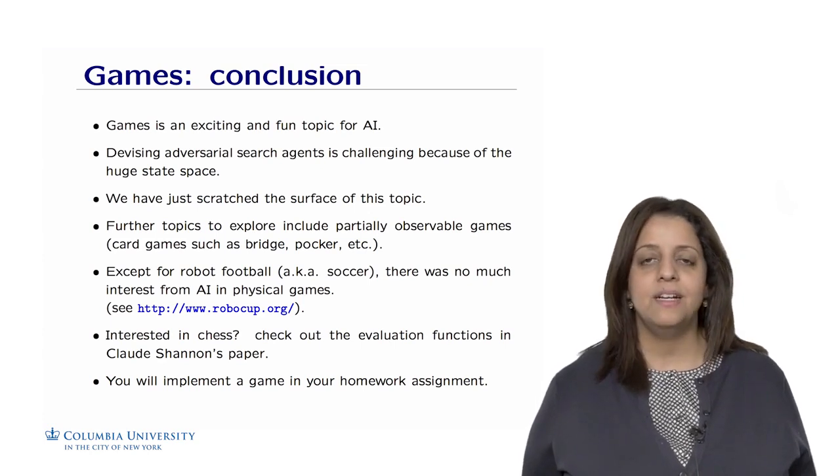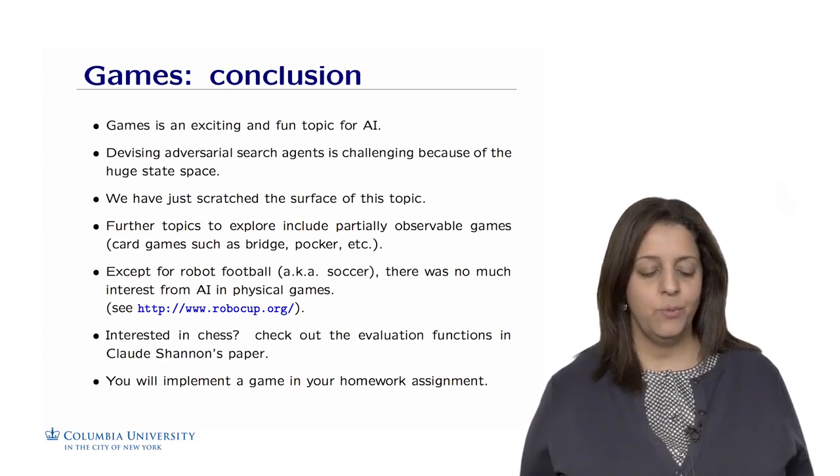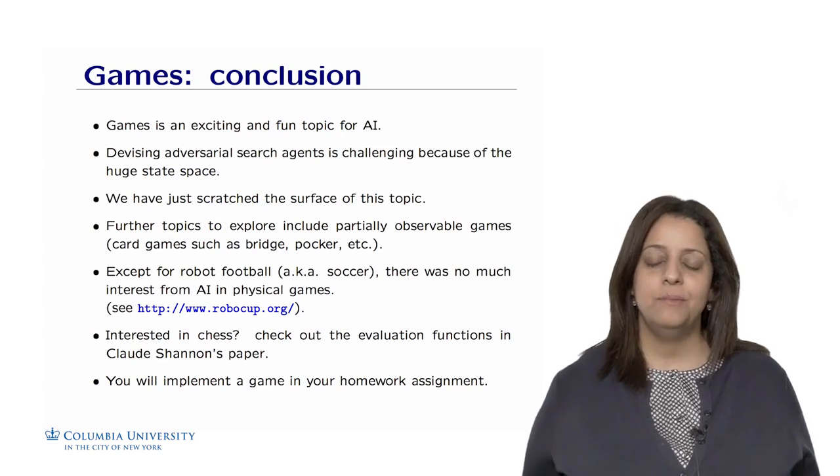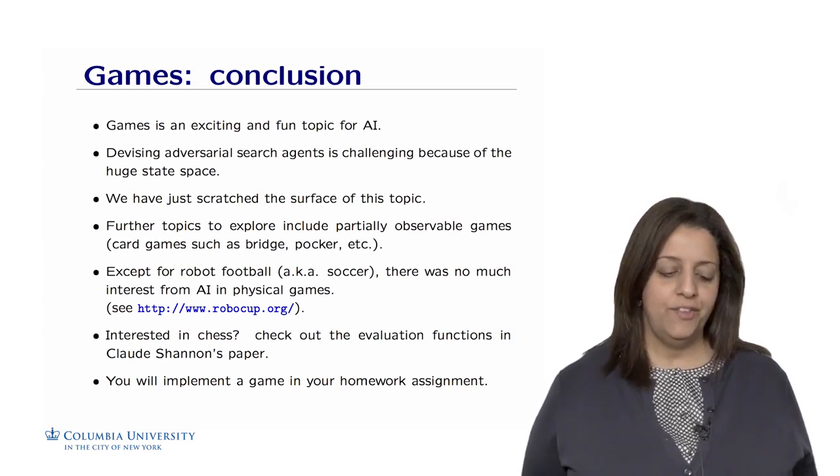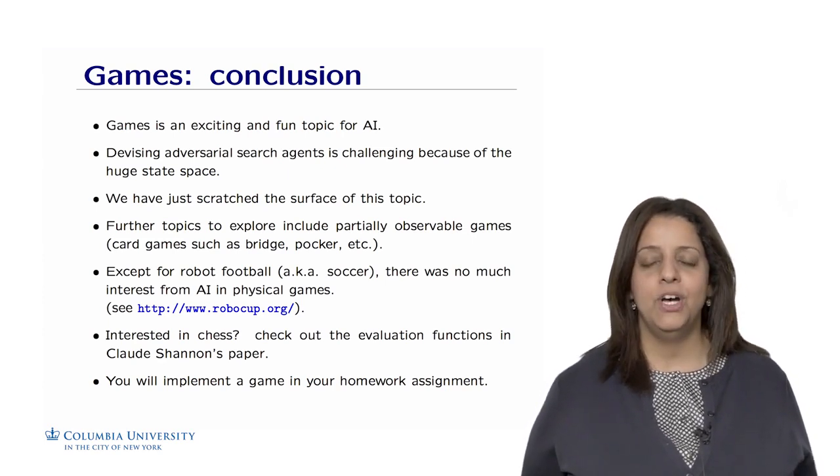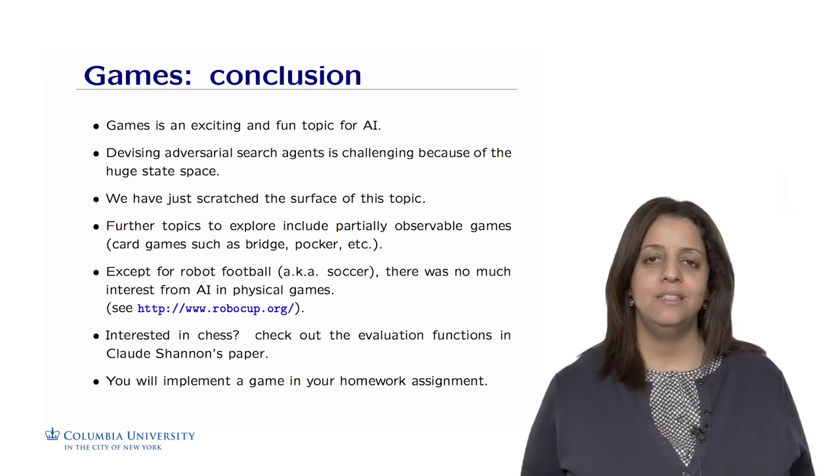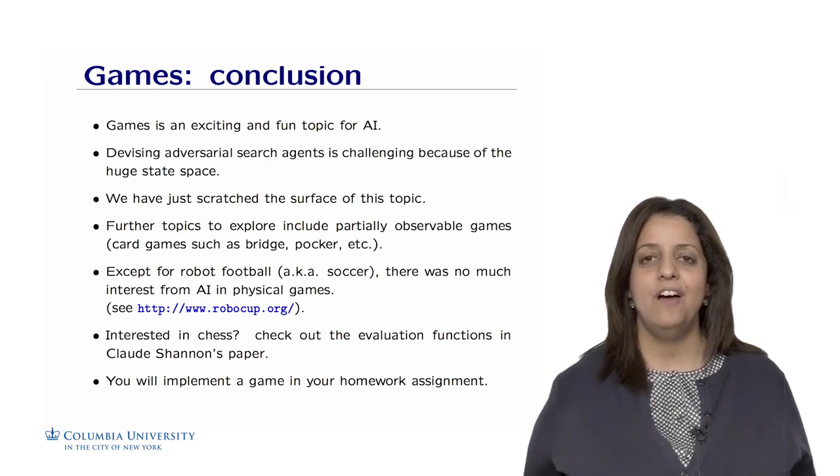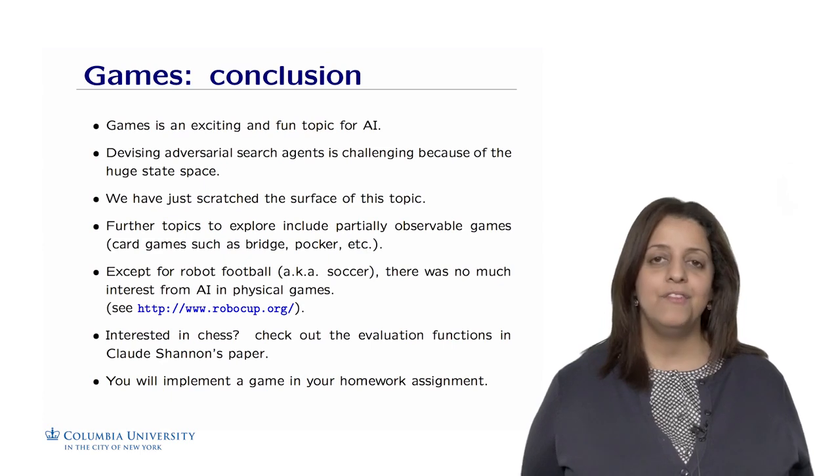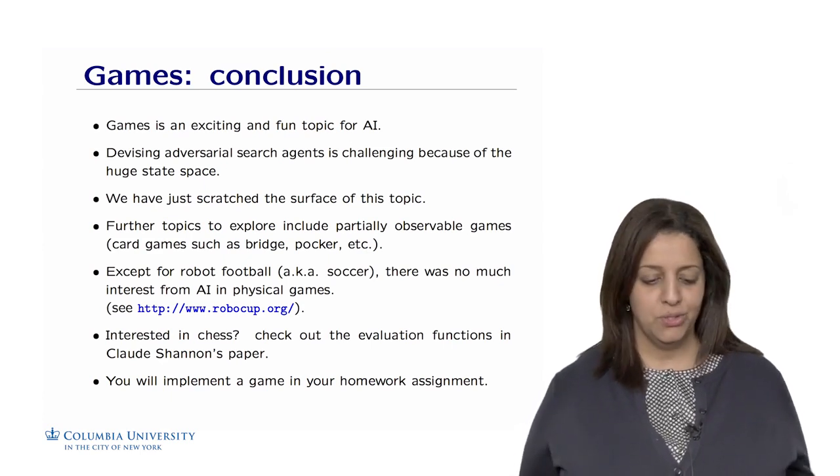Further topics could be explored, including partially observable games in which we have imperfect information. For example, if you play poker or bridge, you don't know what are the cards in your opponent's hand, so you don't have full visibility of the game as compared to chess in which you can see the whole board.